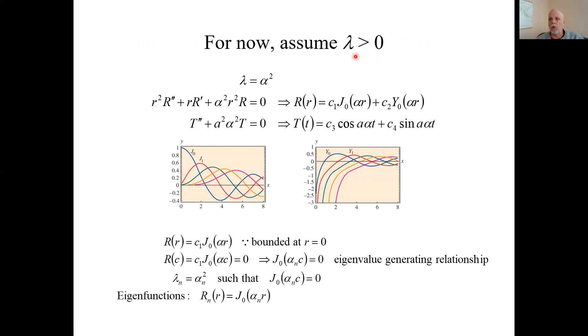For now, for now, we're only going to look at positive eigenvalues, okay? I'll explain this more later, why we can do that. If we restrict ourselves to this, let's see what happens. We'll say that that lambda equals alpha squared. Here's the R equation, which is the Bessel equation of order zero, which has this general solution, right? The Bessel equation of the first kind, and the second kind. Here's the T equation, and it has this known solution.